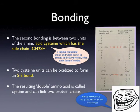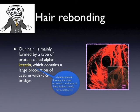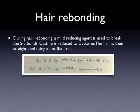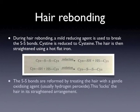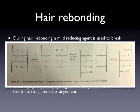Interesting — but is it related to hair re-bonding? Of course! Our hair is mainly formed by a type of protein called alpha-keratin, which contains a large proportion of cysteine with disulfide bridges. Keratin is a fibrous protein forming the main structural constituent of hair. During hair re-bonding, a mild reducing agent is used to break the disulfide bonds — cystine is reduced to cysteine. The hair is then straightened using a hot flat iron. The disulfide bonds are reformed by treating the hair with a gentle oxidizing agent, locking the hair in the straightened arrangement. This is the breaking and reforming of disulfide bridges, which can produce permanent changes in the shapes of protein molecules.